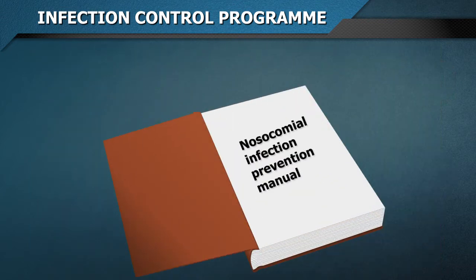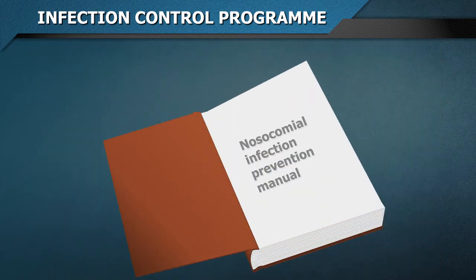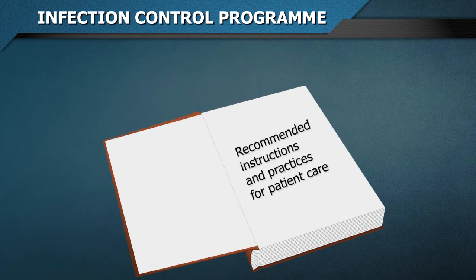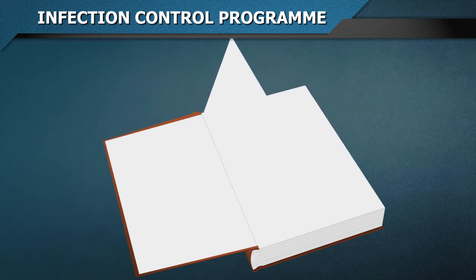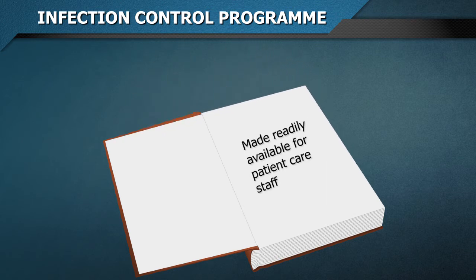An infection control manual — a nosocomial infection prevention manual compiling recommended instructions and practices for patient care — is an important tool. The manual should be developed and updated by the infection control team with review and approval by the committee. It must be made readily available for patient care staff and updated in a timely fashion.